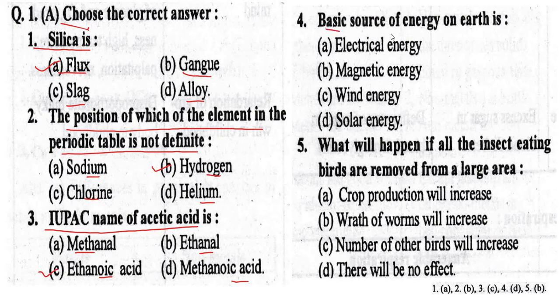Question No. 4. Basic source of energy on earth is: Option A: Electrical energy. Option B: Magnetic energy. Option C: Wind energy. Option D: Solar energy. The correct option is Option D, Solar energy.